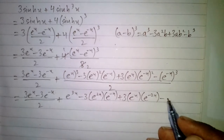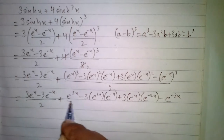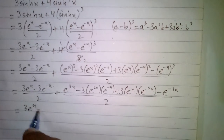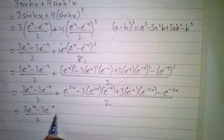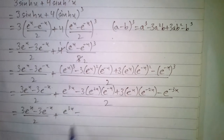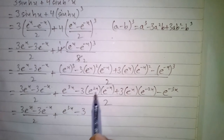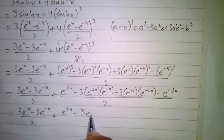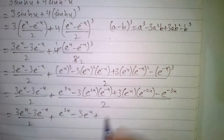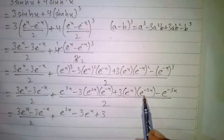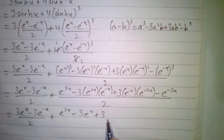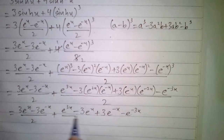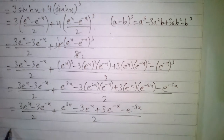Now we have 3 times e to the power x minus 3 times e to the power minus x, upon 2, plus: e to the power 3x, minus 3 times e to the power 2x times e to the power minus x — which is e to the power x — plus 3 times e to the power x times e to the power minus 2x — which is e to the power minus x — minus e to the power minus 3x, upon 2.